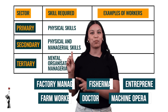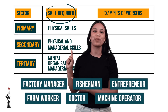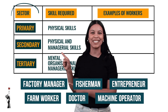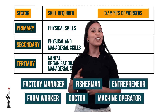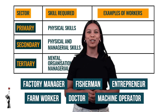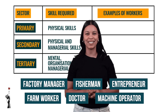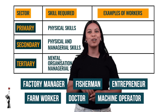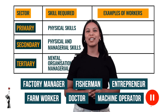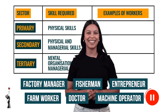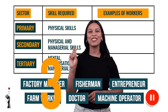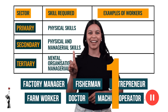Now it's your turn. Match the labourers to the correct skill set and economic sector. You can go ahead and tell your teacher what you think the answers are. Also, pause this video so that you can complete it effectively. Are you ready? Three, two, one.